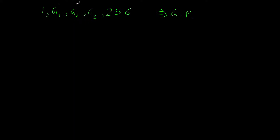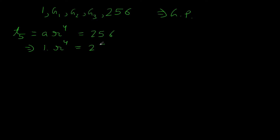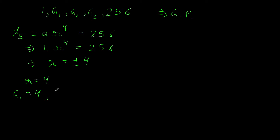Since we have inserted three terms, the sequence has five terms total, and the fifth term is 256. Therefore T5 = AR to the power 4 = 256. Here the first term A is 1, so R to the power 4 = 256, giving R = +4 or R = -4. Taking R = 4: G1 = AR = 1 × 4 = 4; G2 = AR² = 1 × 16 = 16; G3 = AR³ = 1 × 64 = 64.